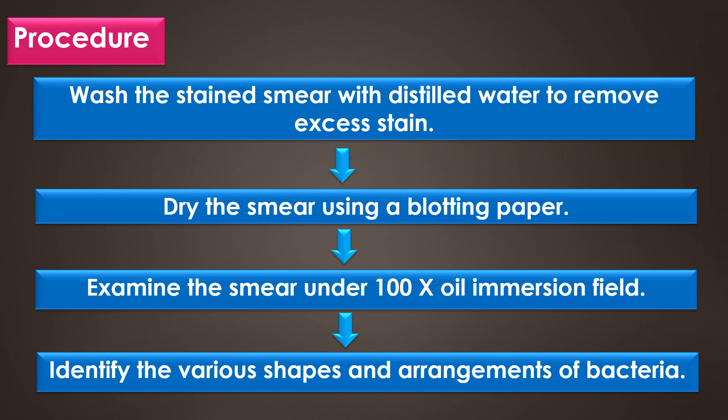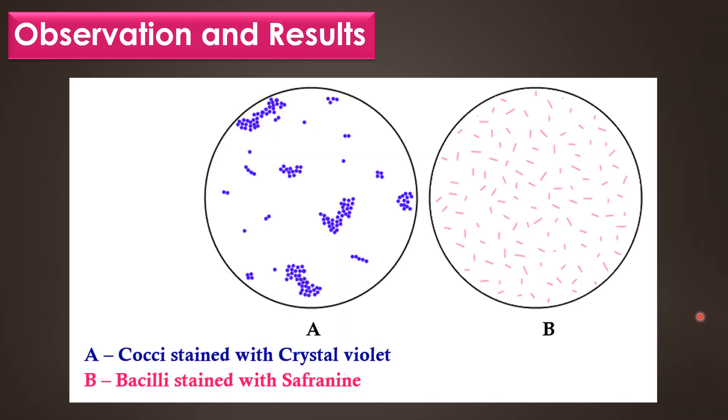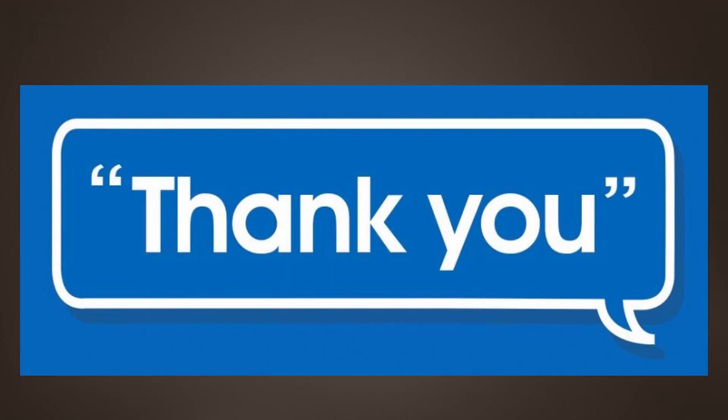In observation: cocci appear in spherical shape, spirilla appear in spiral shape, and bacilli appear in rod shape. The color of the bacteria depends on the stain selected: crystal violet produces violet-colored cells, methylene blue produces blue-colored cells, and safranin produces red or pink-colored cells. Image A shows spherical-shaped cocci stained with crystal violet, and image B shows rod-shaped bacilli stained with safranin.